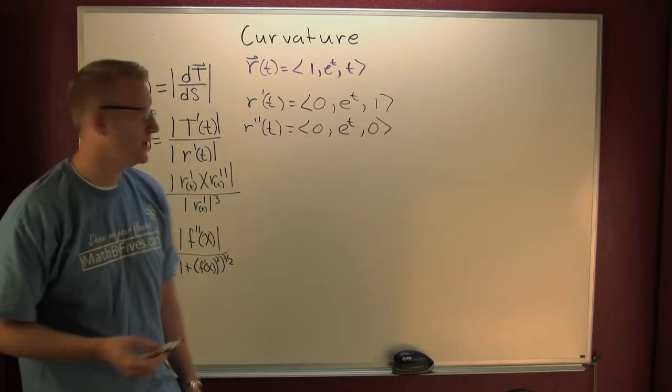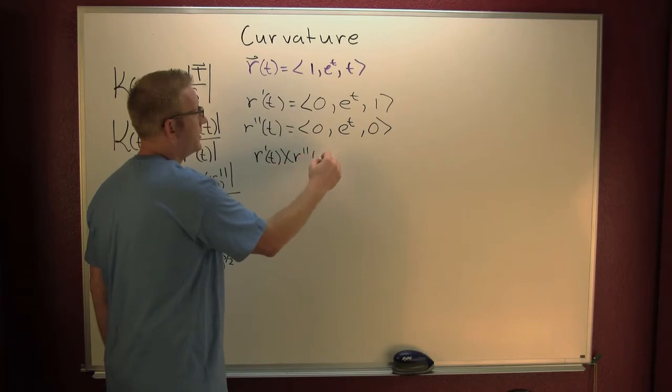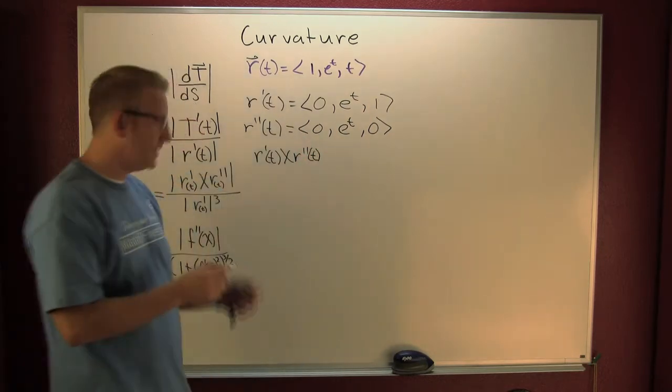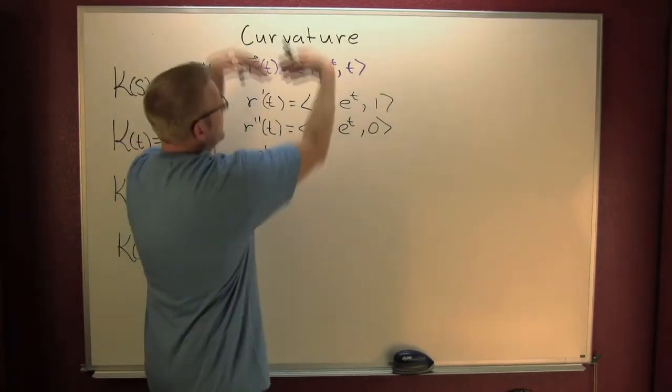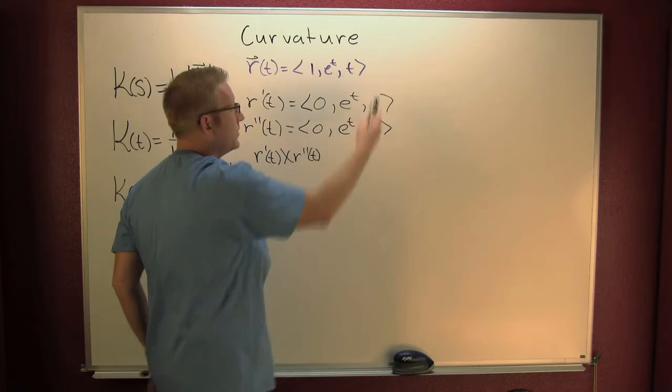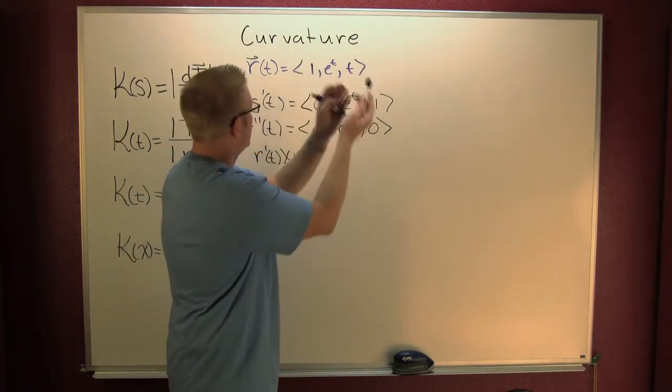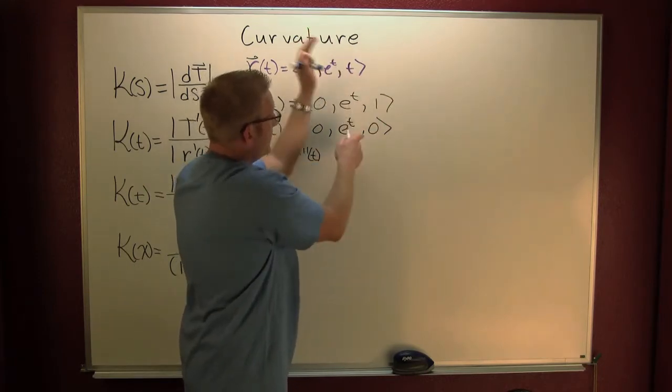Now let me cross those two. I'm going to cross those two. Our prime of t cross our prime prime of t. So we're going to take our determinant where we put the vector i, j, k above it. And when we're doing our crossing, we're using our determinant and it's whoosh, whoosh.